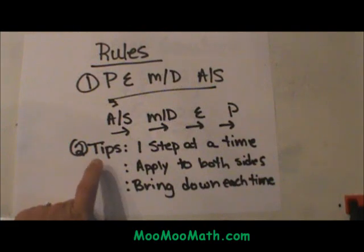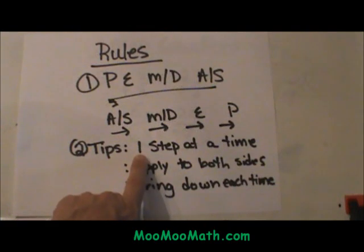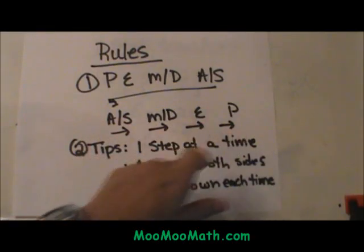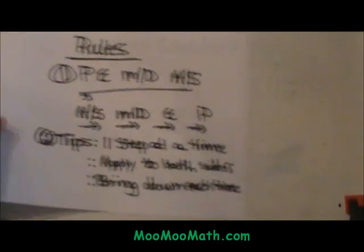A couple tips on solving two step equations: do one step at a time, apply the rule to both sides, and then bring down each time. So let's go through these steps, the order of operations, and use our tips.